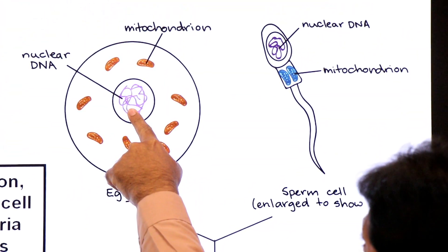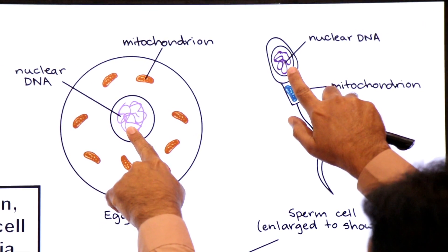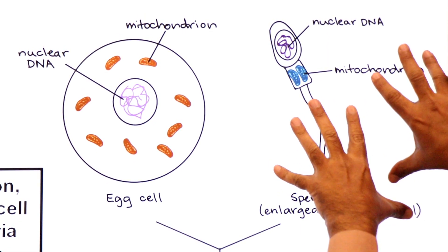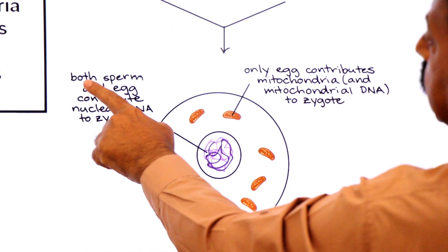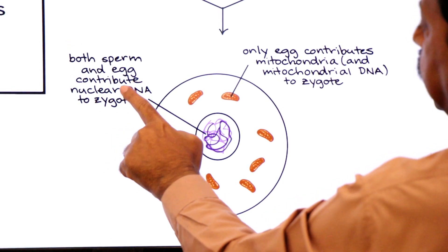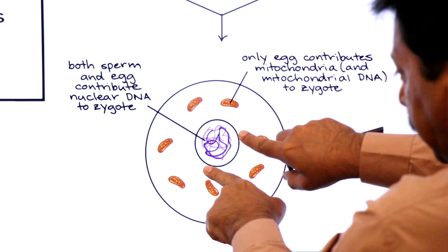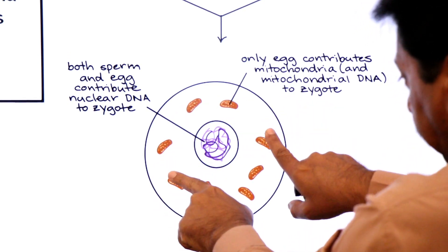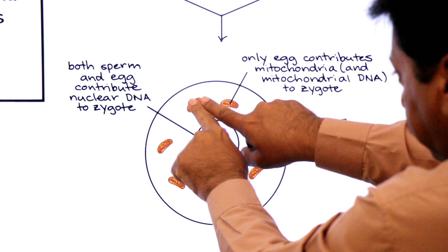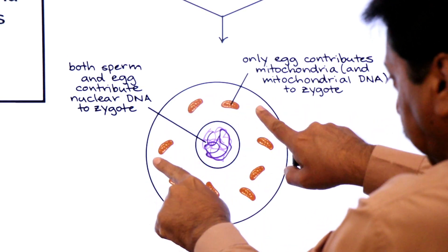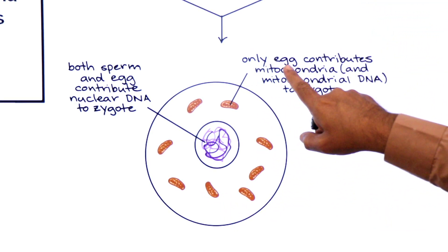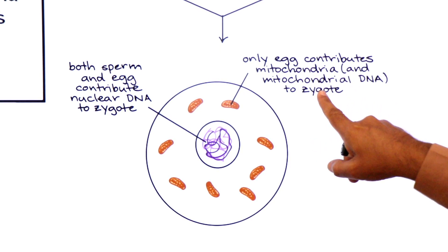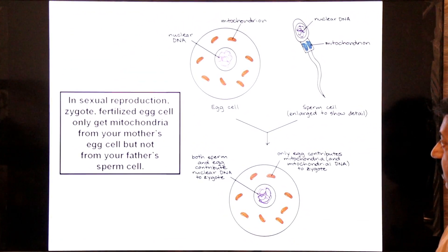Note that the nuclear DNA from both the egg and the sperm is contributed to the zygote during fertilization. In the zygote, there is father's DNA and mother's DNA as nuclear DNA. But the mitochondria visible in the zygote are only from the mother — they are inherited only from the mother. Only the egg contributes mitochondria and mitochondrial DNA to the zygote.